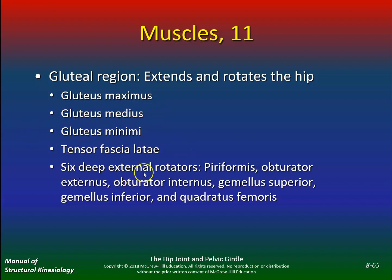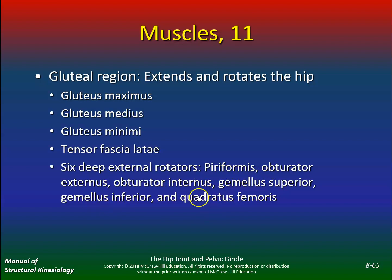You've got six deep external rotators: piriformis, obturator externus, obturator internus, gemelli superior, gemelli inferior, and quadratus femoris. A lot of people neglect these, but these are like your rotator cuff of the hip — similar to the supraspinatus, infraspinatus, teres minor, and subscapularis of the shoulder. When there are problems with these muscles, they can cause all sorts of pain down the leg.